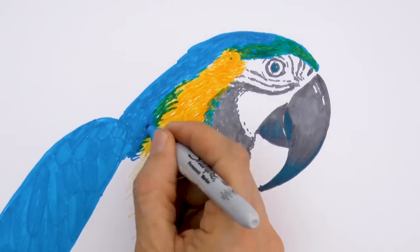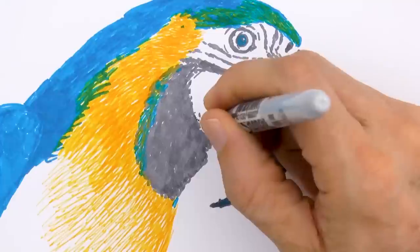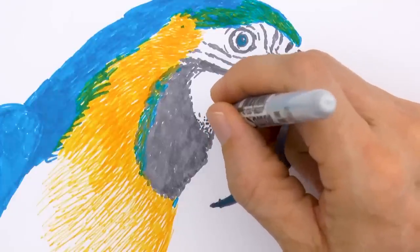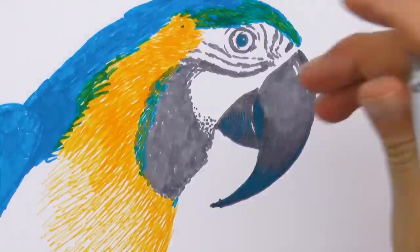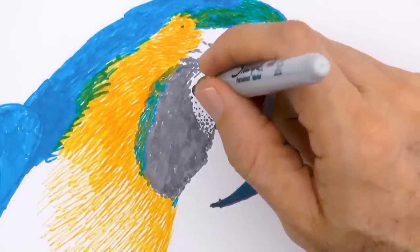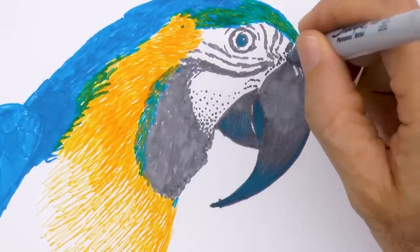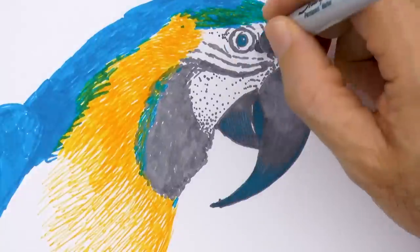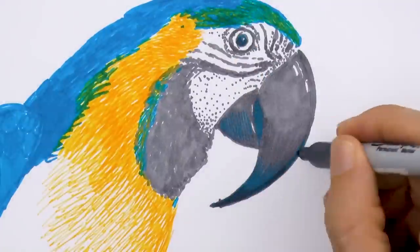And I added it also on the beak, trying to make it darker. But of course I will go over it again with the gray, so it doesn't look blue. I used little dots to create texture and shadow to the face area, which has no feathers.